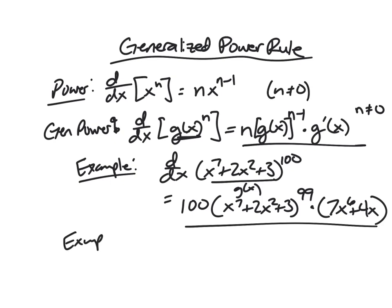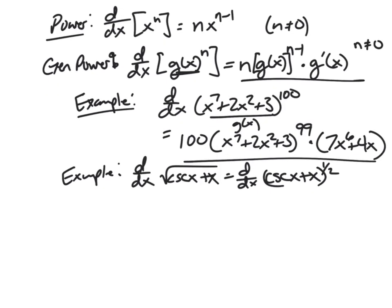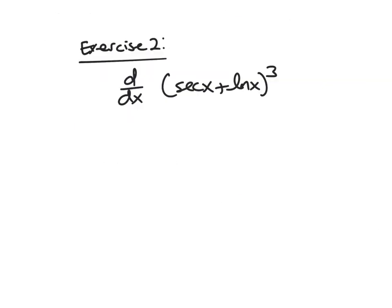Let's take the derivative of the square root of cosecant x plus x. We rewrite this as cosecant x plus x to the 1/2. By the generalized power rule, we get 1/2 times cosecant x plus x to the negative 1/2, times the derivative of the inside, which is negative cosecant x cotangent x plus 1. For your second exercise, take the derivative of secant x plus the natural log of x, the whole quantity cubed. Thank you for watching.